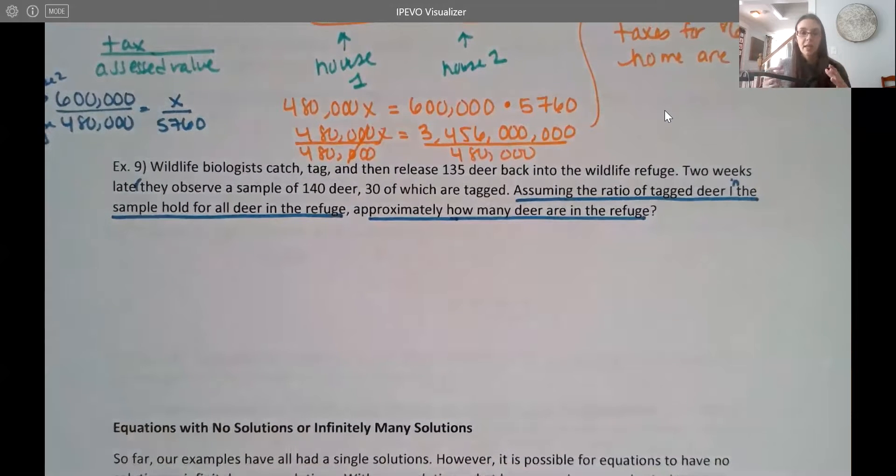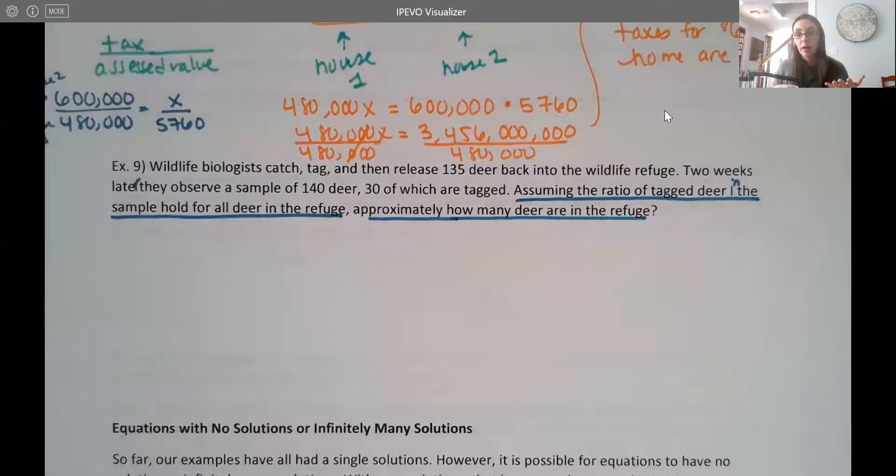So this is a process called tagging. So what they do is they collected in one day 135 deer, they put tags on them, and then they let them go again. And they collect again later on, and they see how many were coming that are tagged. And you assume that the same ratio would exist out in the, I guess, in this case, the wildlife refuge, right, or the wildlife reserve.